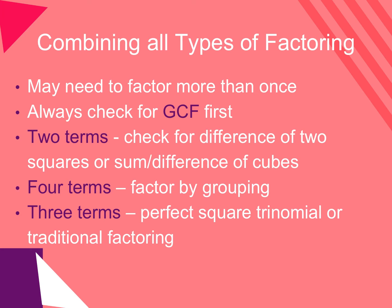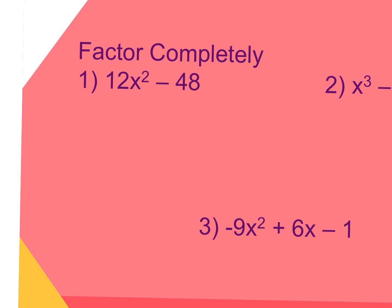Let's go ahead and practice combining all of our techniques. The instructions are going to be the same for all: factor completely. First thing I should always do is look for a greatest common factor. The greatest common factor between 12 and 48 is going to be 12. I can divide both numbers by 12. I always like to show the GCF. In the parentheses, write what you get after you divide, so I'm left with x squared minus 4.